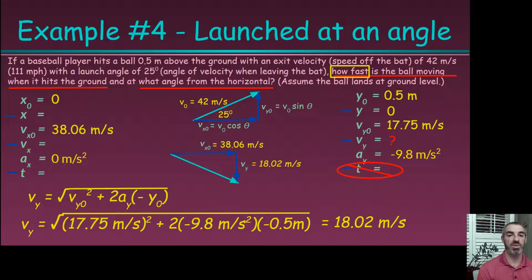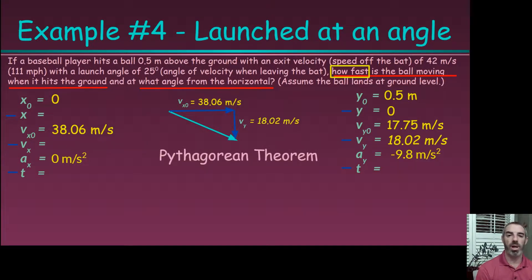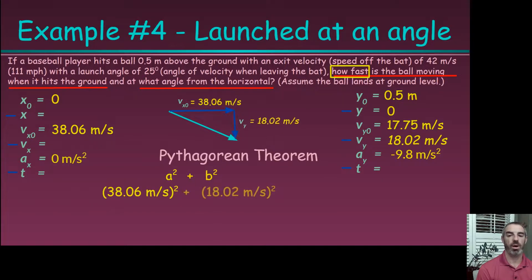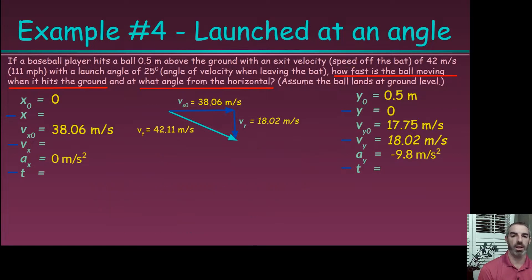If the ball were launched from the same height it lands, the initial and final y-velocities would be equal, making it simpler. But in this case they differ slightly. Now we solve for the hypotenuse — the total velocity — using the Pythagorean theorem: a squared plus b squared equals c squared. Taking the square root of the sum of the squares of 38.06 and 18.02, we find the final velocity is 42.11 meters per second.